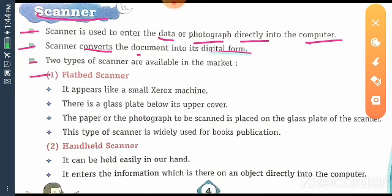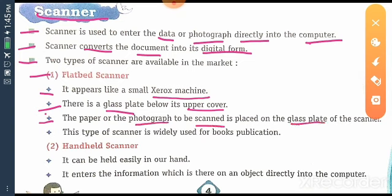First one, flatbed scanner. The topics, it appears like small Xerox machine. Flatbed scanner is just look like a Xerox machine. Second thing, there is a glass plate below its upper cover. The paper or the photograph to be scanned is placed on the glass plate of the scanner. This type of scanner is widely used for books publication.